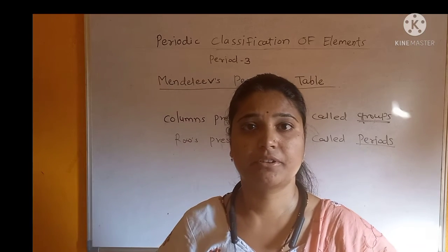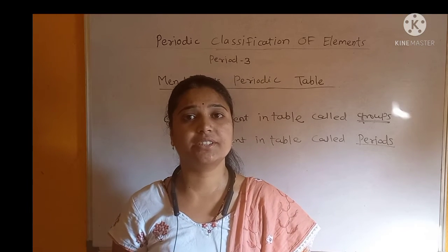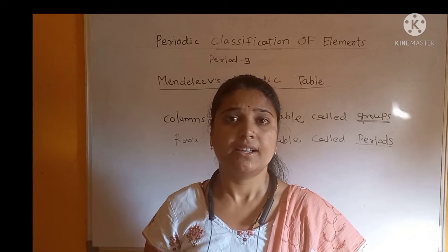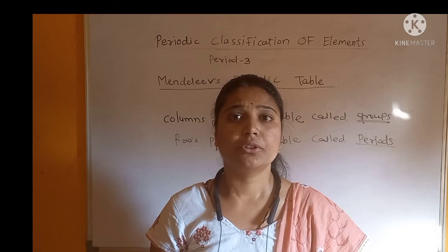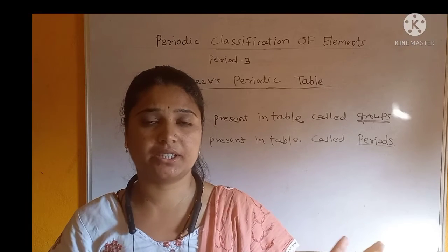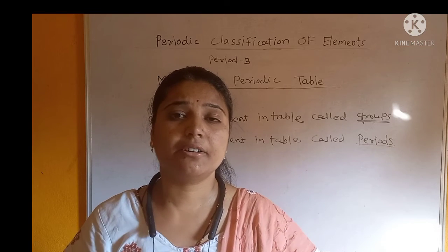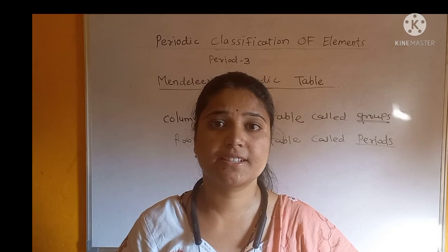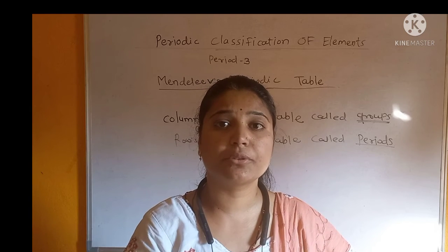The next merit of Mendeleev's periodic table concerns noble gases. We saw that Döbereiner's triads, Newlands' laws of octaves, and Mendeleev's periodic table were three theories. Before Mendeleev, Newlands and Döbereiner did not talk about noble gases at all. But Mendeleev also addressed noble gases, because although his discoveries were made between 1869 and 1879, at the end of the 19th century the discovery of noble gases was made. Mendeleev then created one special group for noble gas elements.